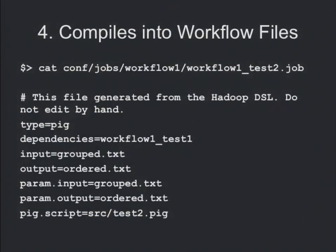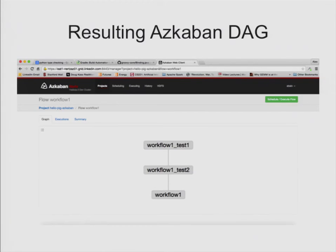At the end of the day, you compile your Hadoop DSL, and if you say 'build for Oozie' or 'build for Azkaban,' it spits out an Azkaban file. I just wanted to show what it spits out. If you uploaded the sample code I showed you, this would be the little DAG — job test two depending on job test one. Azkaban would run job test one first, then job workflow one test two, and say workflow is complete.